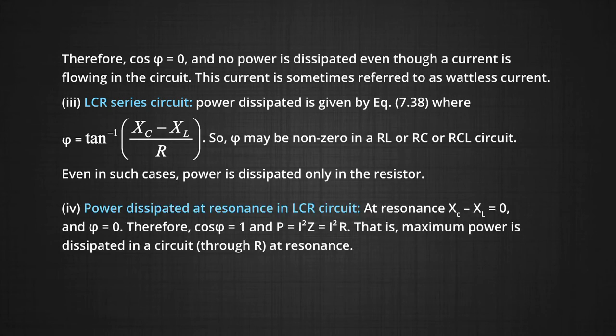If we take another case, power dissipated at resonance in LCR circuit. At resonance X C minus X L equals zero. That means X C equals X L, that time phi equals zero. Therefore cos phi equals one, then the power will be P equals I squared Z that is equal to I squared R. That is maximum power which is dissipated in the circuit through R, which is the condition for resonance or it will happen at resonance.